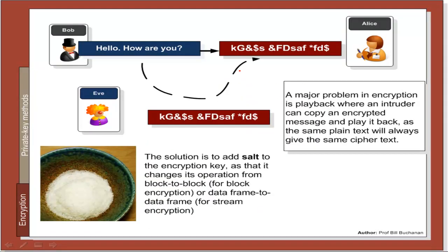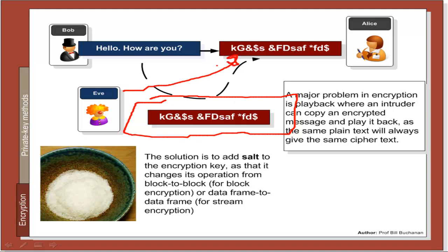The problem is that if Eve listens to the message, she can see the cipher stream. Eve could play this back in the future and it would look like a valid message. Even though she cannot find the encryption key, she can do a playback. She could also copy and paste bits of the message or analyse the mapping between the ciphertext and the plaintext. To address this, we often add what's called salt into the encryption process, which stops the same piece of plaintext arriving as the same piece of ciphertext.